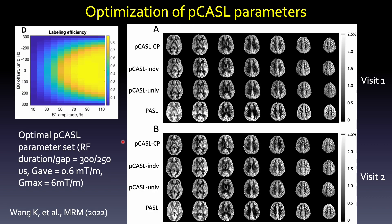You can see the dramatic improvement of labeling efficiency as well as the PASL perfusion image quality. However, that method requires individual calibration. So another way is to use optimized labeling parameters. For example, our group has proposed a really short RF duration and gap using 300 and 250 microseconds respectively, trying to minimize phase error accrual during the PASL pulse. Using this method, we can achieve reliable PASL imaging without any adjustment, as shown in the first row.